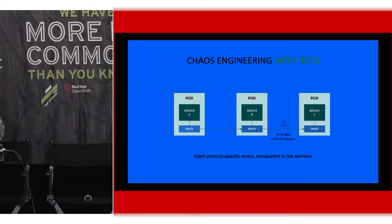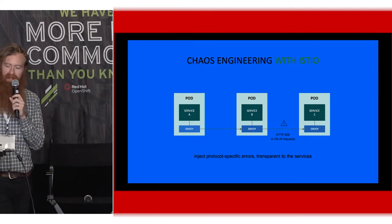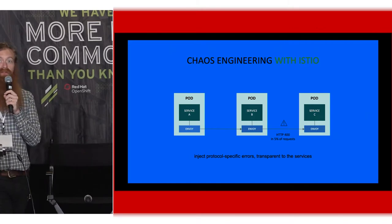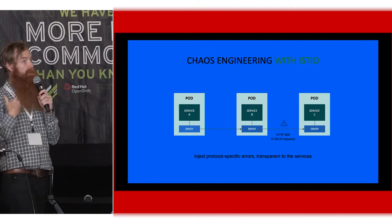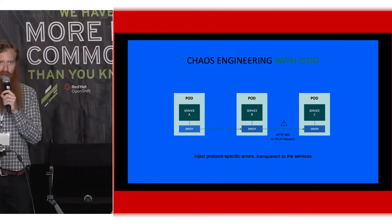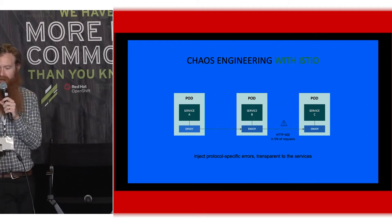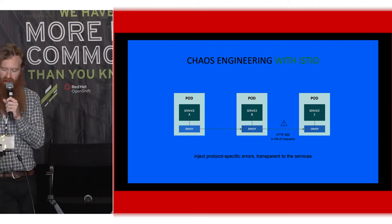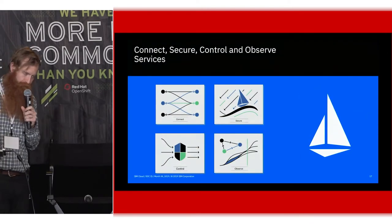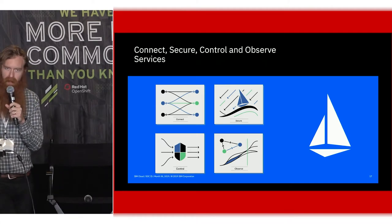Beyond just introducing time-based problems, we can actually introduce protocol-specific errors as well — for example, what will happen when there's a 400 error versus a 500 error. Will it attempt to do the retry because it's a transient error? This allows us to make sure that everything operates the way we would expect it to. The last area of functionality to talk about is observability.